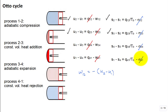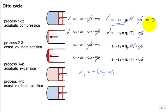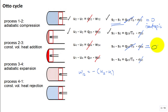Why are all the entropy generations for each of the processes zero? Because they're internally reversible, and then it's adiabatic. Hence, for process one to two, S is constant — isentropic. So the process one to two is isentropic. What other process is isentropic in the cycle? Three to four. Three to four is also isentropic.